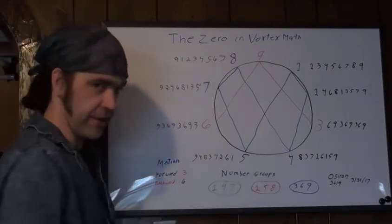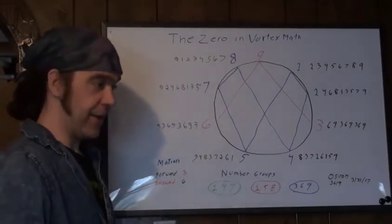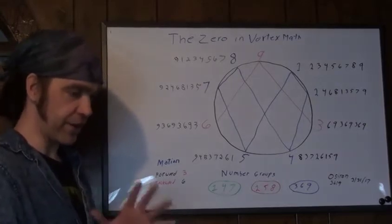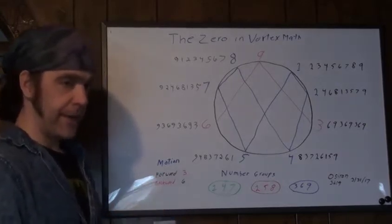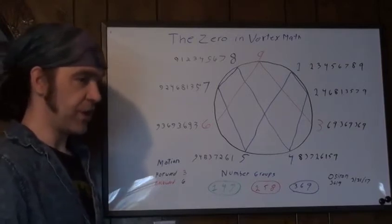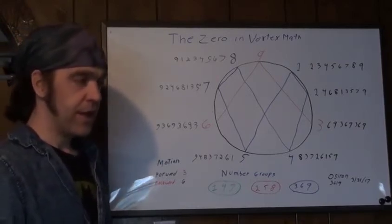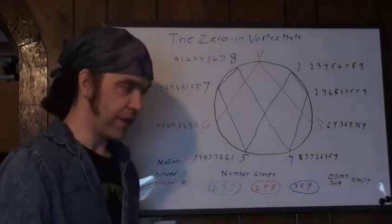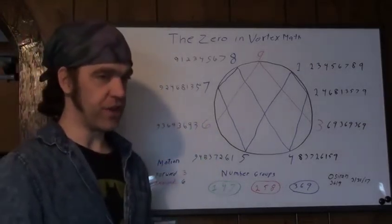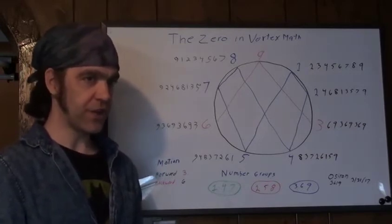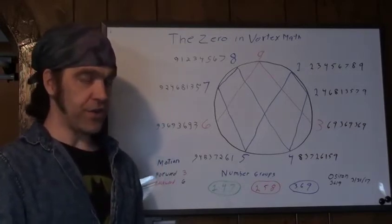And then as I've shown in the proof of God series, you start getting into the cube structure and how the Kundalini grid, it also explains why the metric system is toxic.